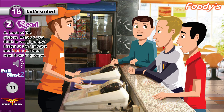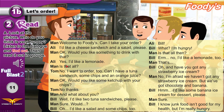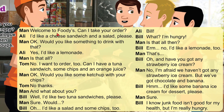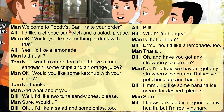Read: Look at the picture. Who do you think is hungry — Tom, Bill, or Ali? Listen to the dialogue and find out. Try to know who is hungry, then read it out in groups. Welcome to Foodies! Can I take your order? I'd like a cheese sandwich and a salad, please.